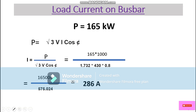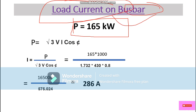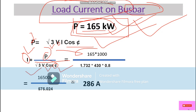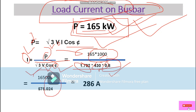Based on the connected load, we now calculate the load current. For three-phase power: P = √3 × V × I × cos φ. Rearranging for current: I = P / (√3 × V × cos φ). Substituting values: P = 165 kW (165,000 W), √3 = 1.732, phase voltage = 415 V, and power factor = 0.8. The calculated current comes out to 286 amperes, which is the load current on the bus bar.